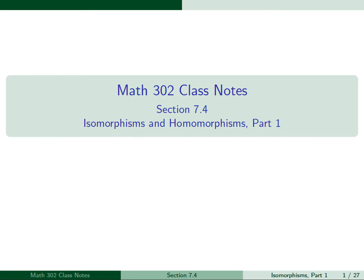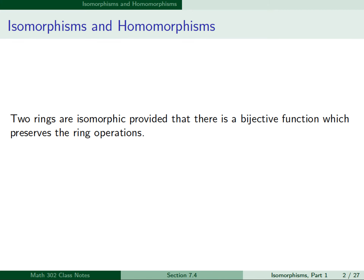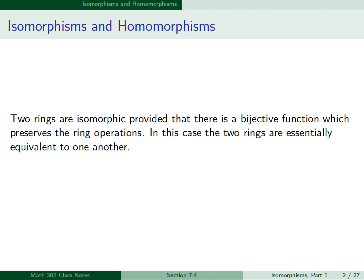This is the lecture for Part 1 of Section 7.4, Isomorphisms and Homomorphisms. In the chapter on ring theory, we defined two rings to be isomorphic provided there is a bijective function which preserves the two ring operations. In this case, the two rings are essentially equivalent to one another. We can define two groups to be isomorphic in a similar way.